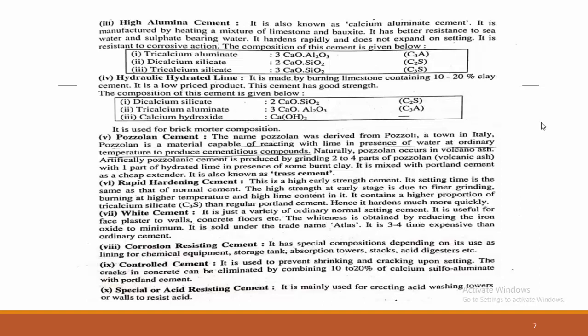Rapid hardening cement provides high early strength, and its setting time is the same as that of normal cement. White cement is a variety of ordinary normal-setting cement, useful for face plaster on walls, concrete floors, etc. Its whiteness is obtained by reducing the iron oxide content to a minimum; the iron oxide composition is very low compared to other cements. Finally, there is corrosion resisting cement, controlled cement, and special acid resisting cement — making ten types of cement in total.